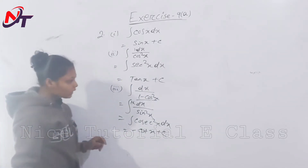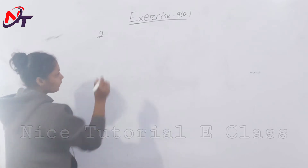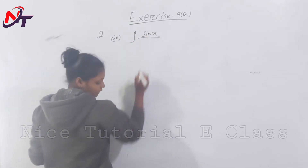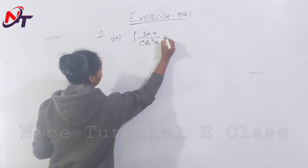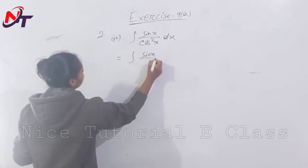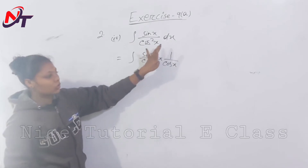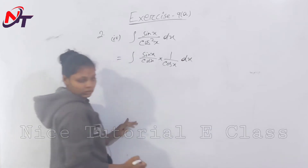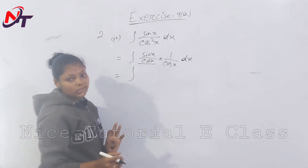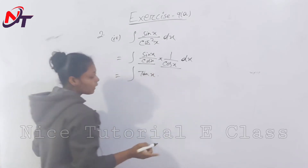The answer is minus cot x plus c. Now look at the fourth question, question number 4b. Integration of sin x divided by cos square x dx. We can write sin x by cos x as tan x, and 1 by cos x as sec x, so we get integration of tan x into sec x dx.